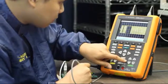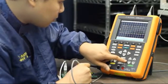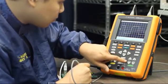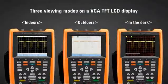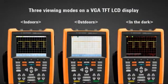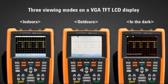The U1610A and U1620A oscilloscopes are the world's first handheld scopes to come with three viewing modes on a VGA TFT LCD display.